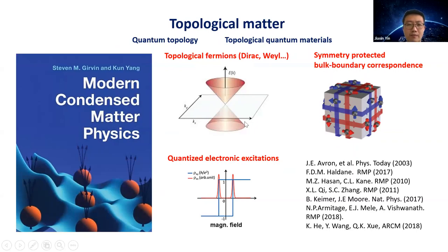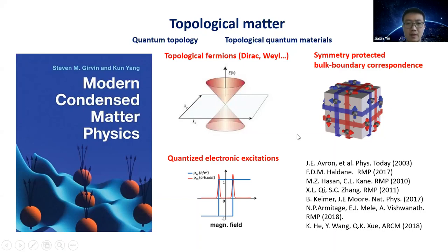Since the 1980 discovery of the quantum Hall effect, quantum topology has fundamentally shaped our understanding of quantum matter, and more topological quantum materials have been discovered. These often feature three classes of phenomena: first, topological fermions — Dirac-Weyl solutions of quantum field theory familiar from high energy physics; second, symmetry-protected bulk-boundary correspondence; and third, quantized electronic excitations such as the quantum anomalous Hall effect.